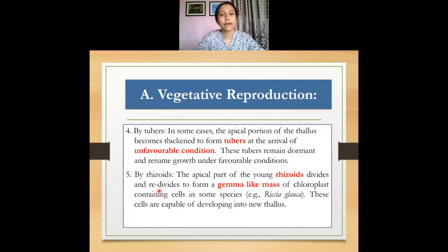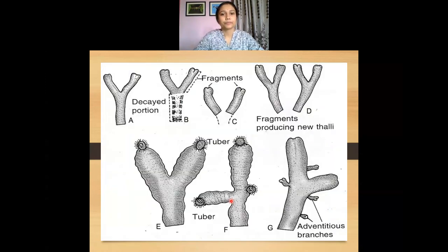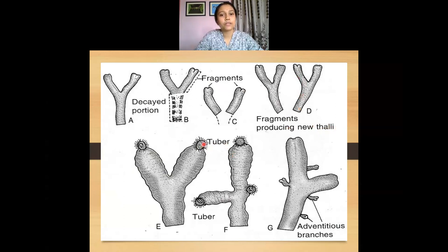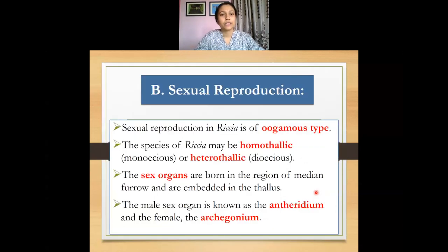Vegetative reproduction also occurs by rhizoids — young rhizoids divide and re-divide to form a gemma-like structure, similar to the gemma found in Marchantia; in Riccia too, this gemma-like mass of cells can develop into a new plant. The diagram shows how by death and decay of older portions, new thalli can be produced; how tubers are formed and after detachment can regenerate; and how adventitious branches on the ventral surface of the thallus can, after fragmentation, regenerate into a new Riccia plant.